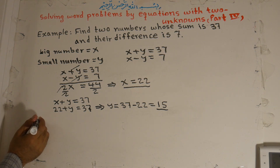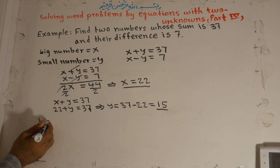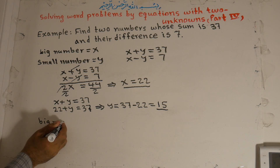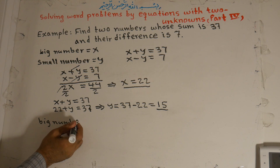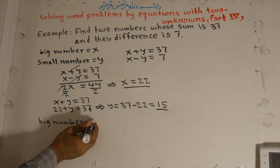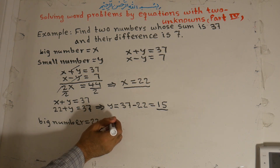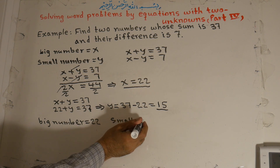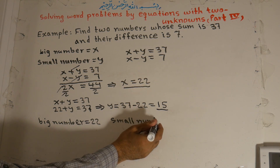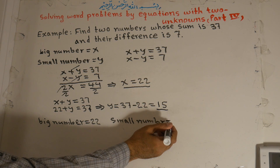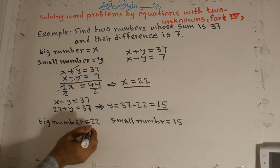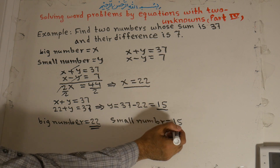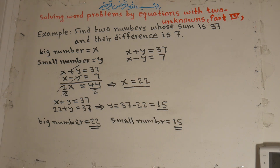So the big number, x, is equal to 22, and the small number, y, is equal to 15. We found two numbers: the big number is 22 and the small number is 15. If you add these two numbers, 22 plus 15 is 37. If we subtract, 22 minus 15 is equal to 7.